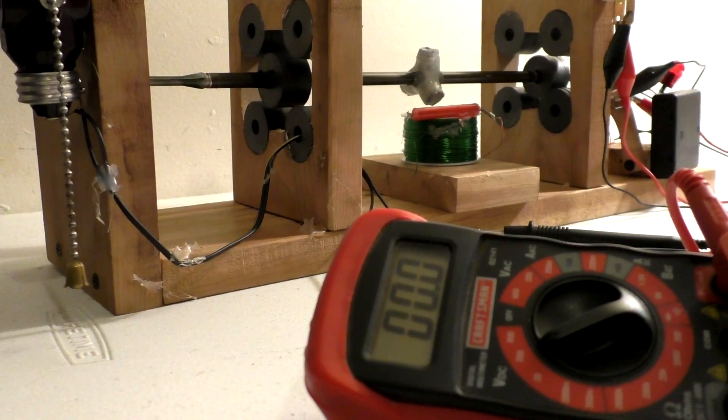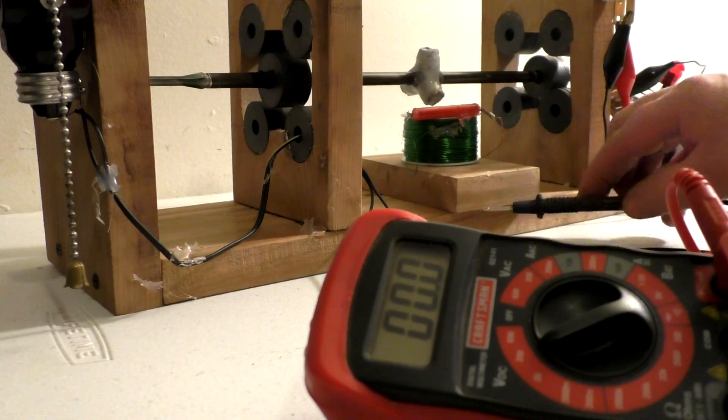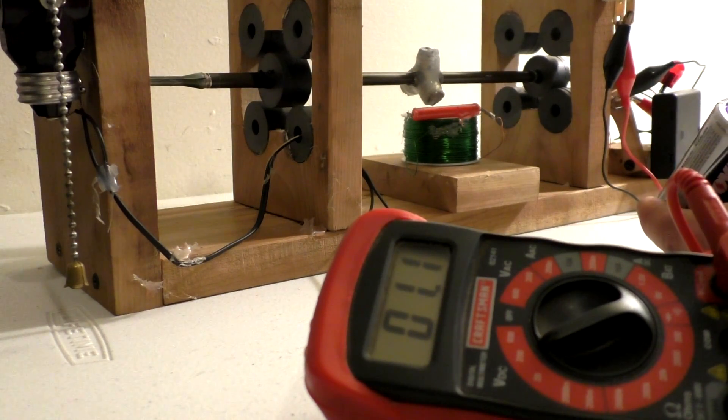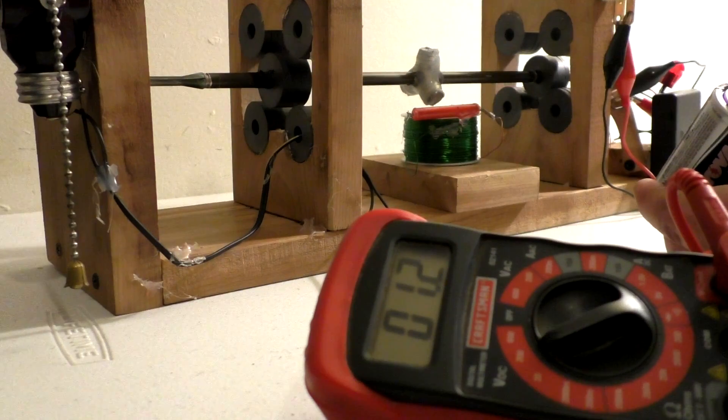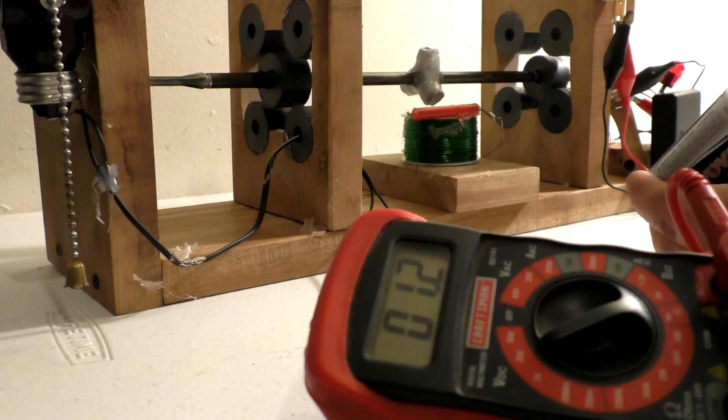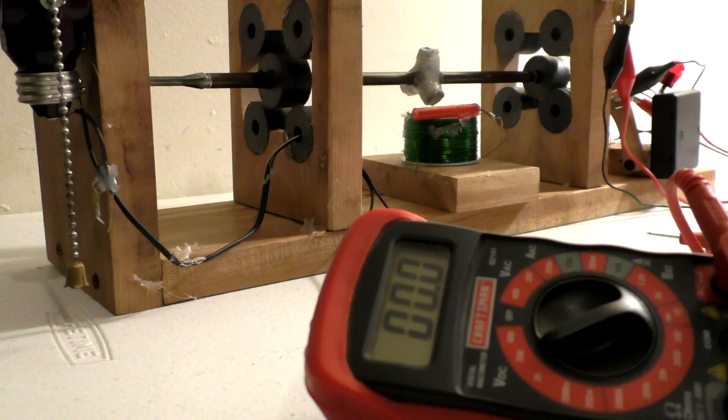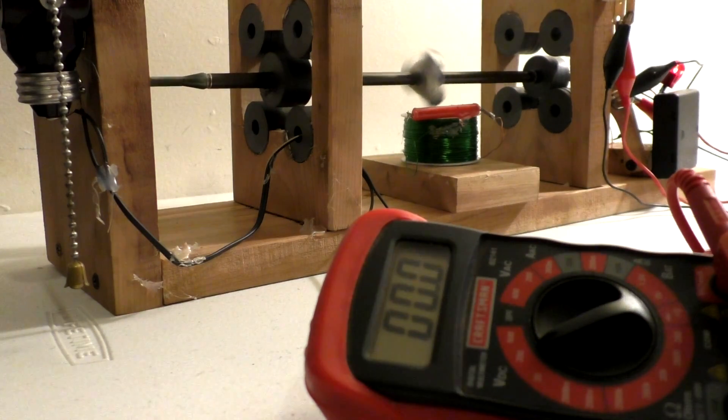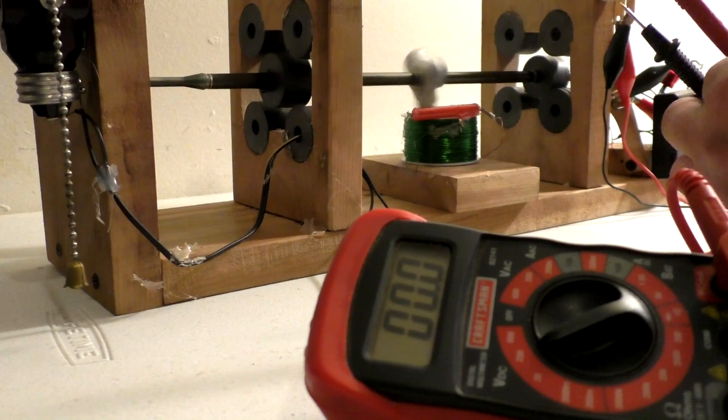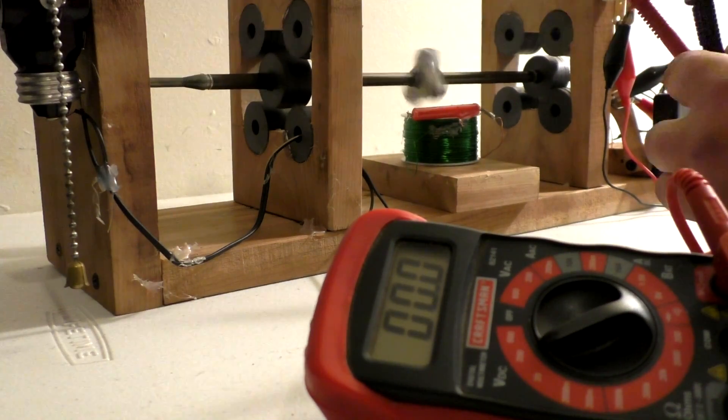All right, I got it set up at 200 volts DC. I'm going to use an AA battery here. You can see that, or I'm sorry, that D battery. It's at 1.2 volts. We're going to go ahead and fire this thing up. I'm going to spin up the speed.